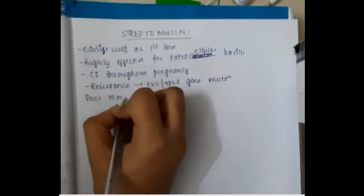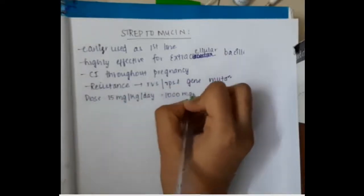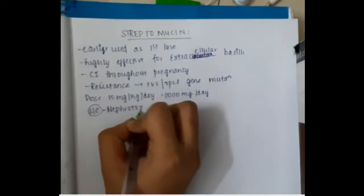Because of the RVS and RPSL gene mutation, we see resistance to streptomycin is recorded. The dosage of streptomycin is 15 milligrams per kilogram per day, which is around 1000 milligrams per day.